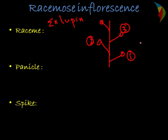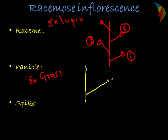The second type of racimose inflorescence is the panicle type. The common example is grass. In the panicle type of inflorescence, we have the main shoot and then lateral branches bearing flowers.